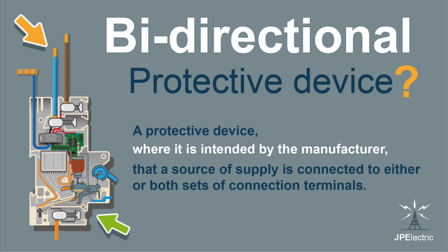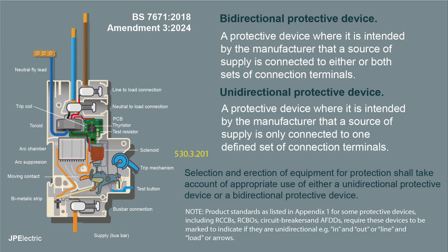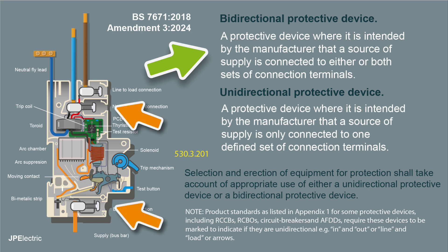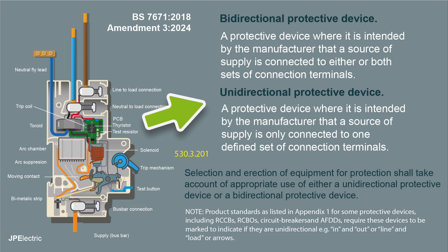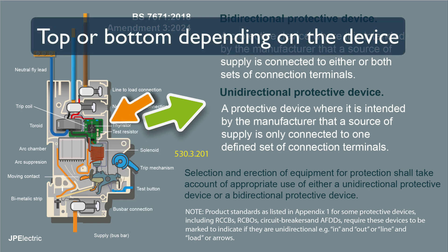Let's have a look at bi-directional protective devices and what they are. A bi-directional protective device is a device where it is intended by the manufacturer that the source of supply is connected to either or both sets of connection terminals. A unidirectional device is a protective device where it is intended by the manufacturer that the source of supply is connected to one defined set of connection terminals.